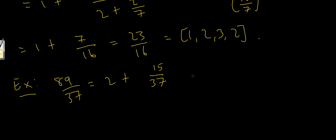Now here's the trick. Using the same idea as above, I know that 15 over 37 is the same as 1 over 37 over 15. So this becomes 2 plus 1 over 37 over 15. And now here's where the fun part starts.